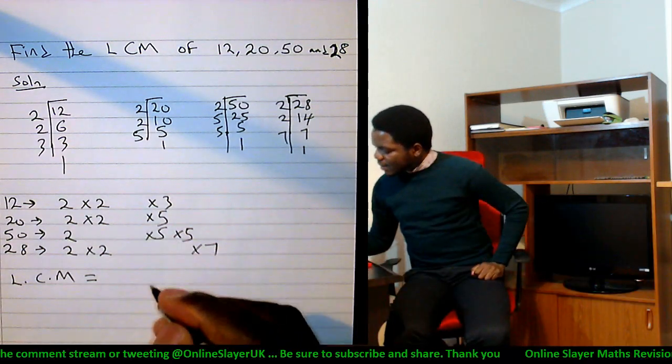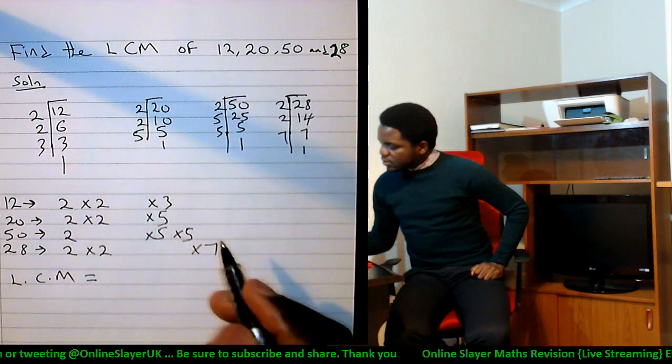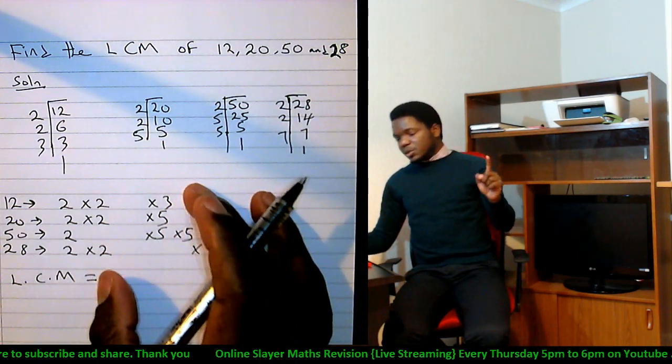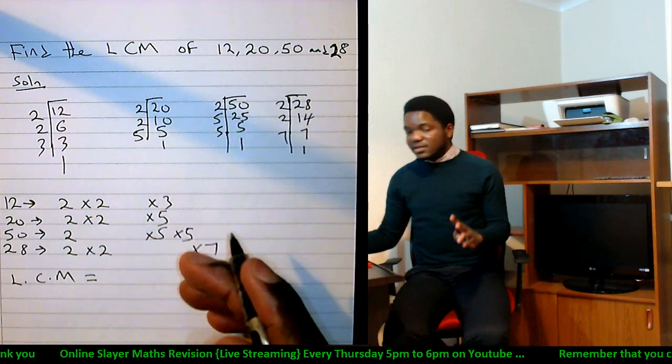Okay, two times two and so on. What are the numbers I can see here? I can see a two, I can see a three, I can see a five, and I can see a seven.